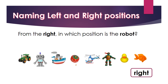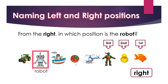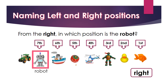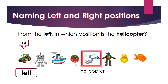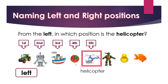Now let's look at the position of the toys from the right. In which position is the robot? The robot is here. From the right, the robot is first, second, third, fourth, fifth, sixth, seventh — the robot is seventh from the right.